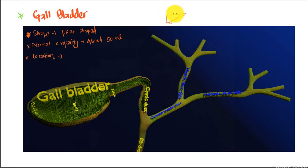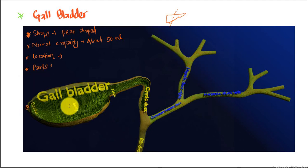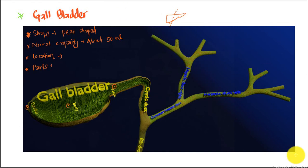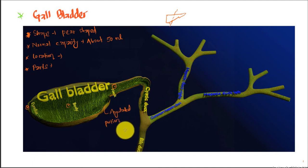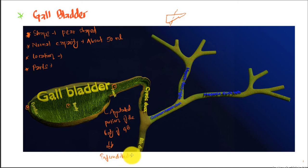The gallbladder is located between the right and left lobe, divided by a line between the gallbladder fossa and the inferior vena cava. Talking about the parts, there are three parts: fundus, body, and neck. In the body, there is an angulated portion on the posterior part known as the infundibulum.